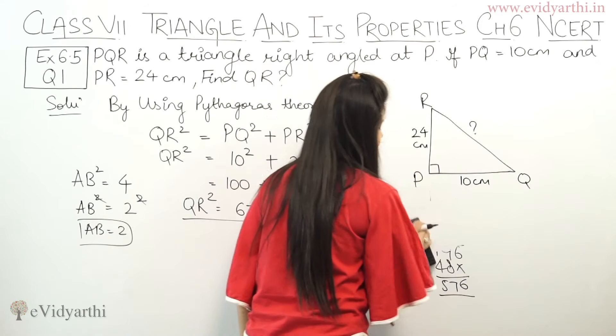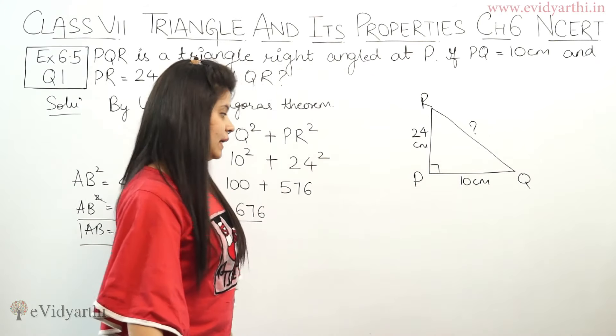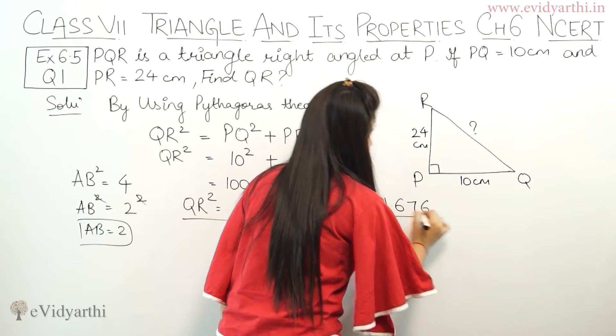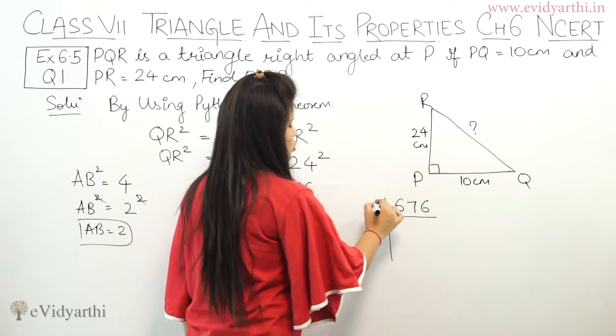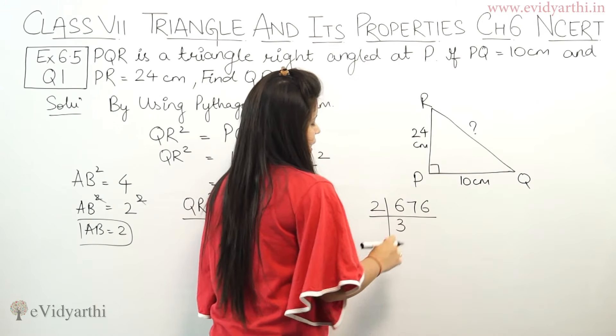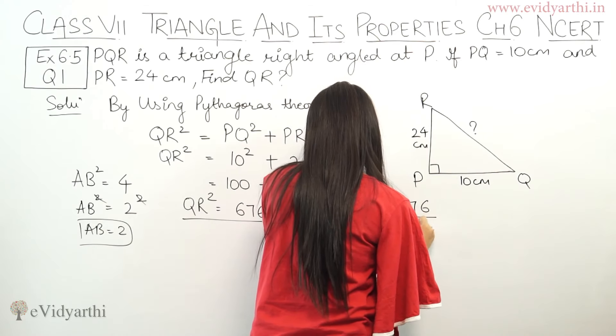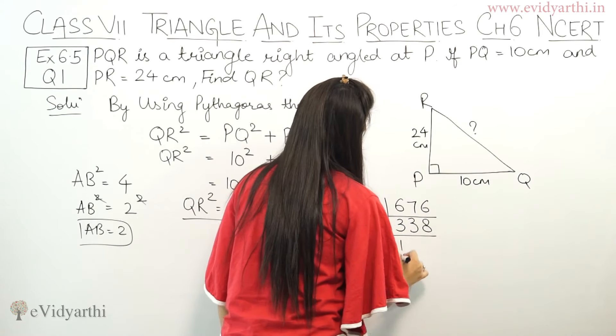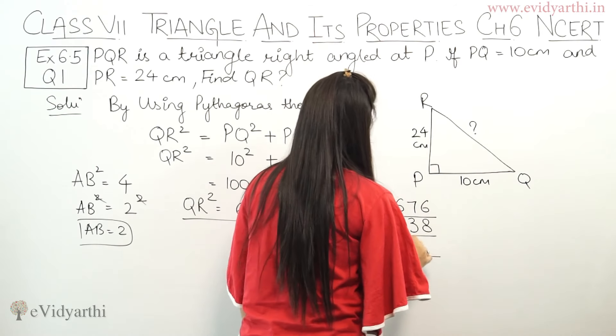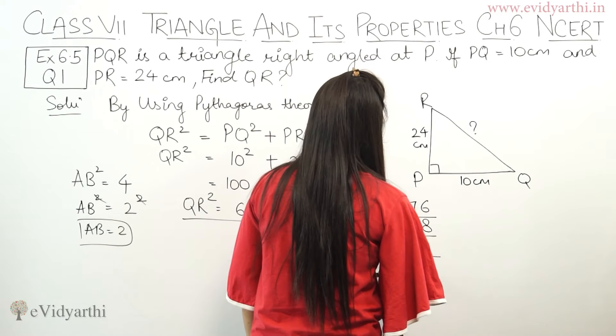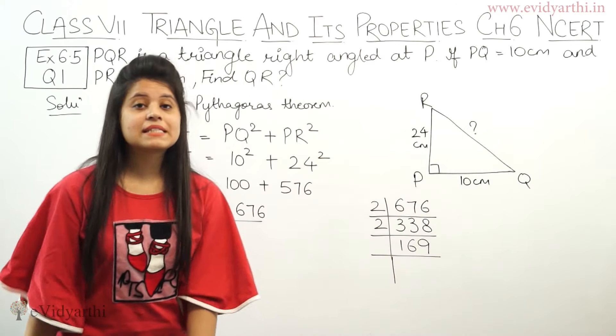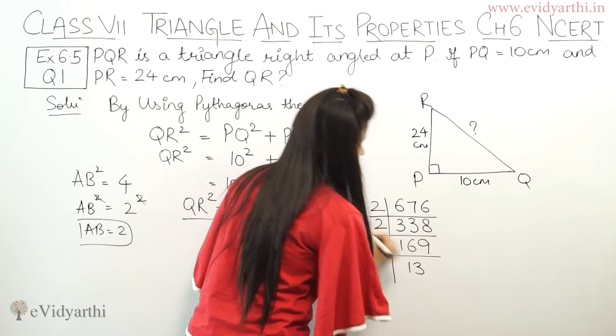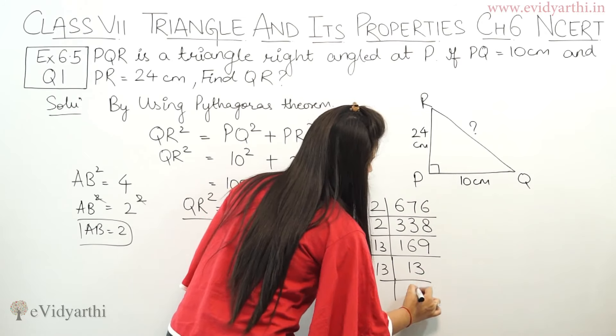Let's find that. Now, let's take prime factorization. My first number is 676. Let's find the factors. Start from 2: this will be 338, 169. This will be divided by 13: 13, then 13 comes, so this will be 1. Now, we have 2 into 2, 13 into 13.